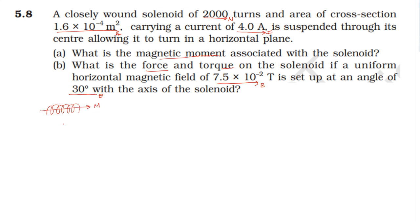The solenoid has a magnetic moment. The solenoid is equivalent to a bar magnet. The magnetic moment M is equal to current into number of turns into area, one point six into ten power minus four.